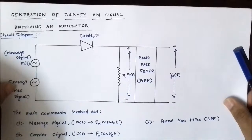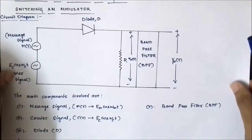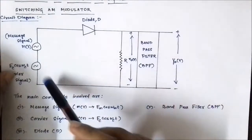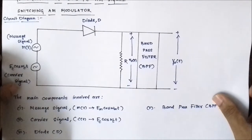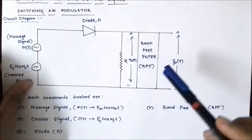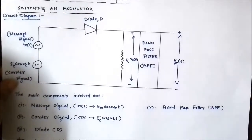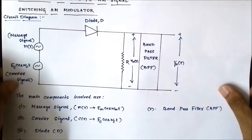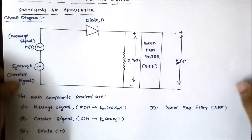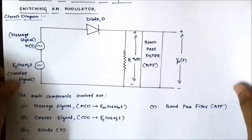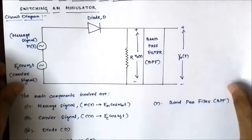The basic circuit diagram for the generation of a DSBFC signal through a switching AM modulator consists of the carrier signal EC cos(ωc·t), the message signal EM cos(ωm·t), a diode, output resistance, and a band pass filter. These are the components involved in a switching AM modulator. Please draw this diagram in rough or get a screenshot of it so that you understand the remainder steps and mathematical descriptions in a better way.